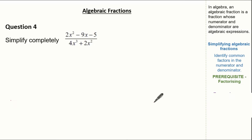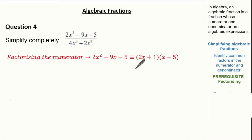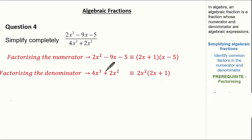Now let's look at a slightly harder question. We are asked to simplify completely 2x squared minus 9x minus 5 over 4x cubed plus 2x squared. Just like before, we can't cancel out our factors because they are not clearly identified, so we need to use our knowledge on factorization. Looking at our numerator, 2x squared minus 9x minus 5 is equivalent to (2x plus 1)(x minus 5). Factorizing the denominator, 4x cubed plus 2x squared is equivalent to 2x squared bracket (2x plus 1).